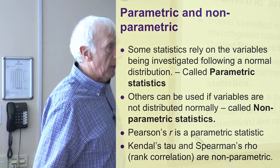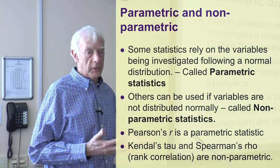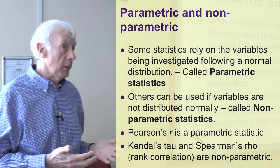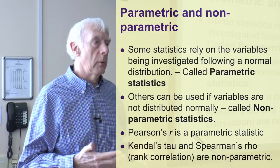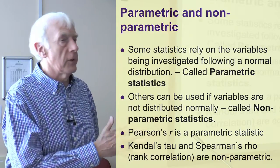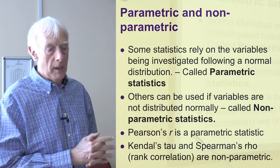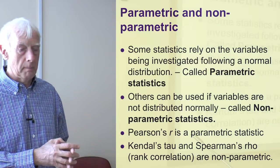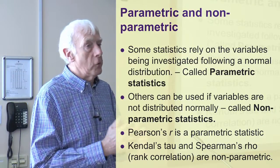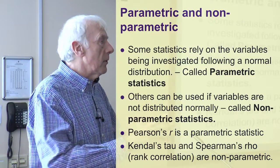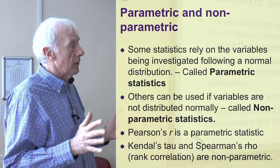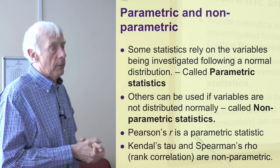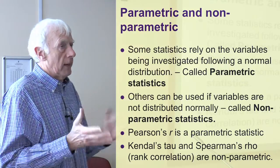Pearson's R is a parametric test, and what that means is that we have to be sure that the variables we're using are normally distributed. So back to what I talked about in previous sessions, you can produce charts and have a look at them, but actually you can do a test as well to see whether they're normal or not. What if the variables aren't normally distributed? In many cases, these kinds of measures often are not. In that case, we have to use non-parametric statistics that don't make assumptions about normality.